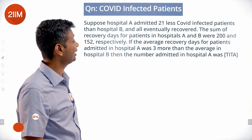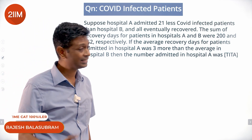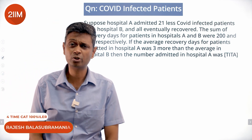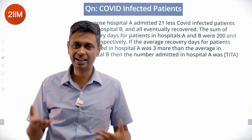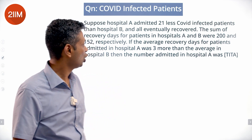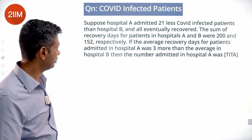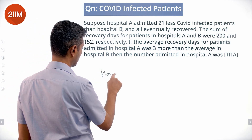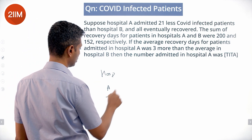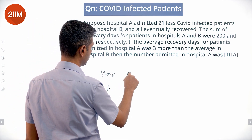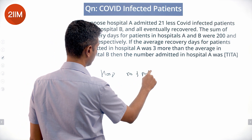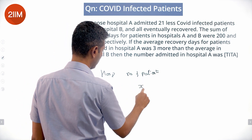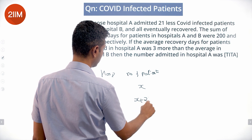Suppose hospital A admitted 21 fewer COVID-infected patients than hospital B. So hospital A has x patients and hospital B has x plus 21 patients.